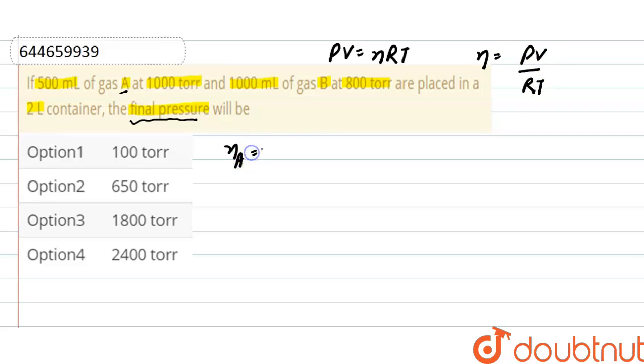And here, number of moles of gas A is: pressure of the gas A is 1000 and volume is 500, divided by RT. As RT is constant, number of moles of B is 800, the pressure, into 1000, the volume, divided by RT.